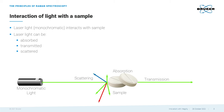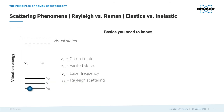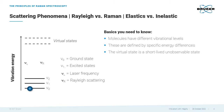In scattered light, we differentiate between elastic or Rayleigh scattering and inelastic or Raman scattering. But what is the difference? Before we jump into the details, here are some basics you need to know. Molecules have different vibrational levels, which are defined by specific energy differences. The virtual state is a short-lived, unobservable state.